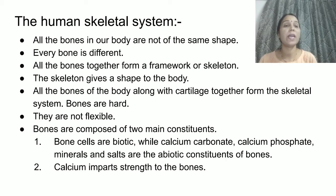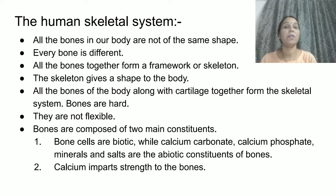All the bones of the body along with the cartilage together form the skeletal system. Bones are hard — unlike skin, they are not flexible. Bones are composed of two main constituents: bone cells, which are the biotic component, and calcium carbonate, calcium phosphate, minerals, and salts, which are the abiotic constituents of bones.